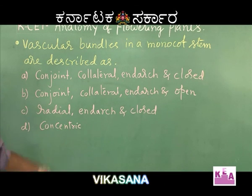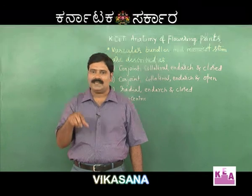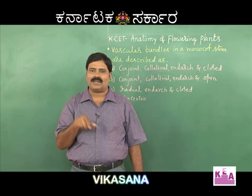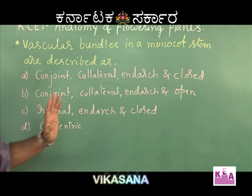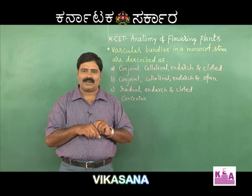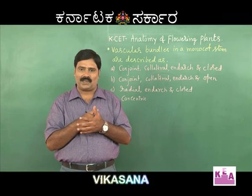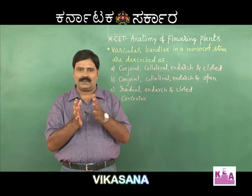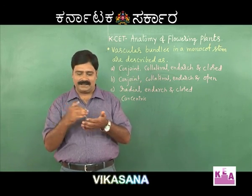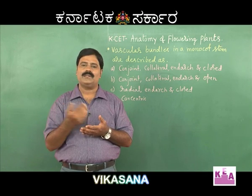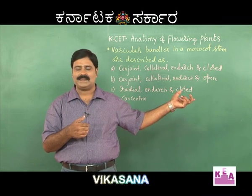The radial character is not observed in stems. One more character is concentric, where vascular bundles are observed in concentric rings with xylem centered and phloem surrounding it. In the monocot vascular bundle, both xylem and phloem are together — hence conjoint. They are also collateral. The endarch condition means xylem faces the center and phloem faces outward. The important character here is closed, meaning cambium is absent.